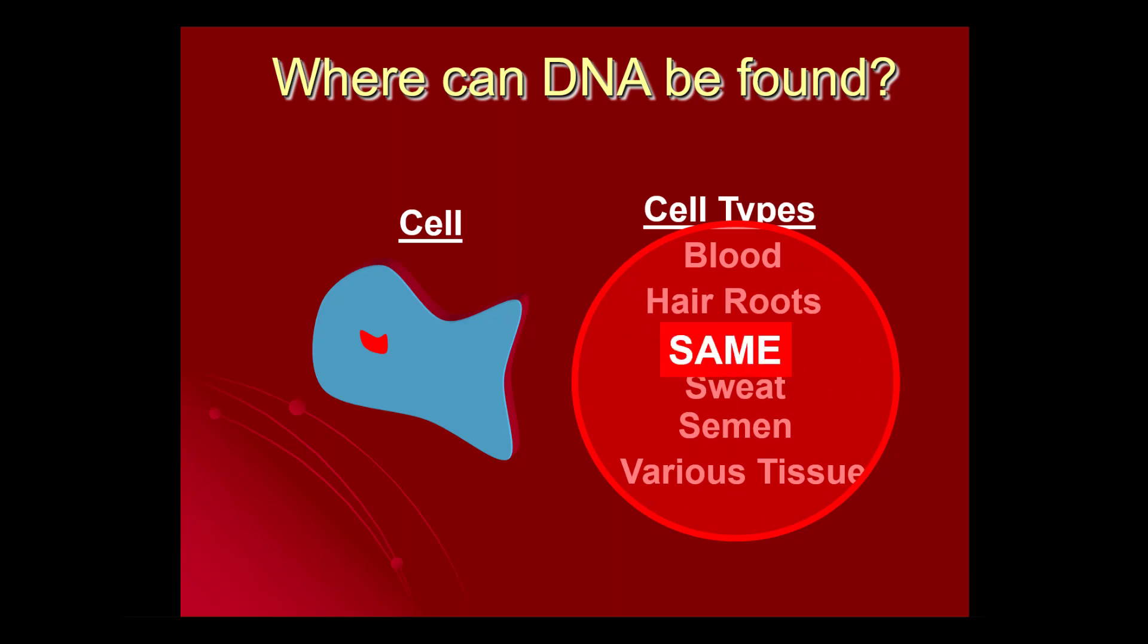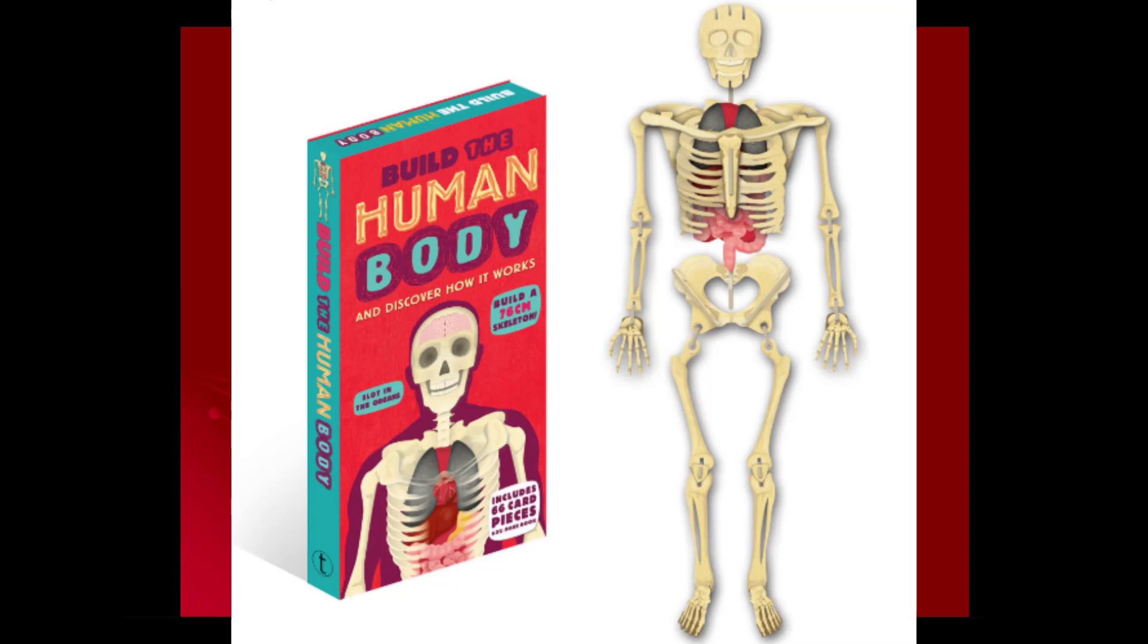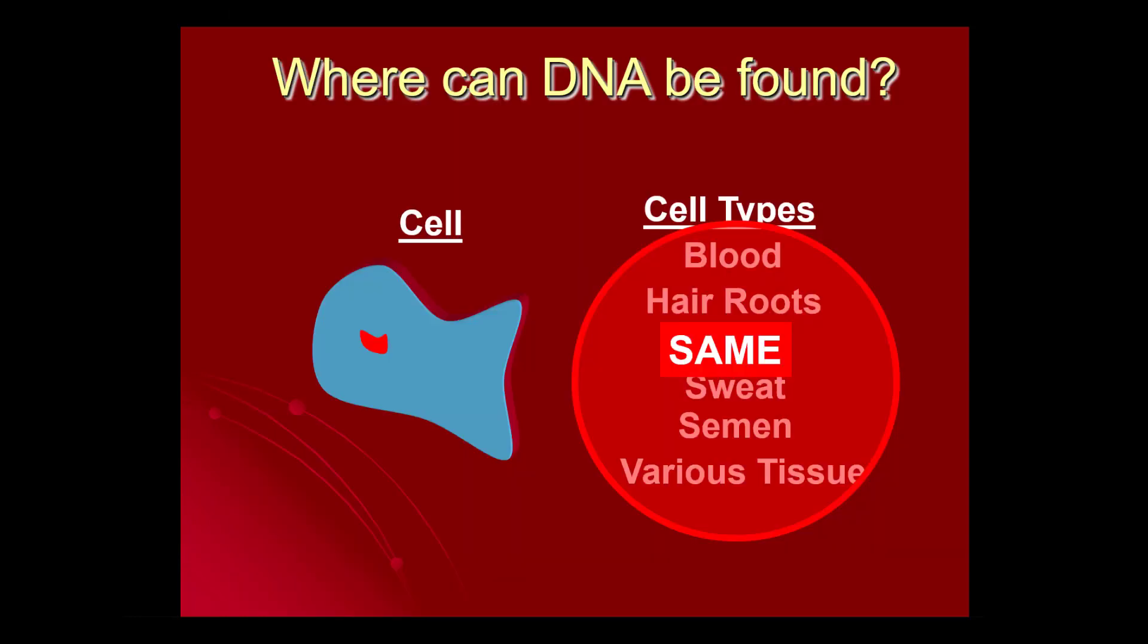They're all going to have the exact same DNA in them. Now it doesn't mean that the DNA is expressed in the same way, because certain things will get turned on, other things will get turned off in order to make those distinctive individual cell types. But each cell contains the full set of instructions for how to build a person. It's just not all those instructions are being used at any given time.